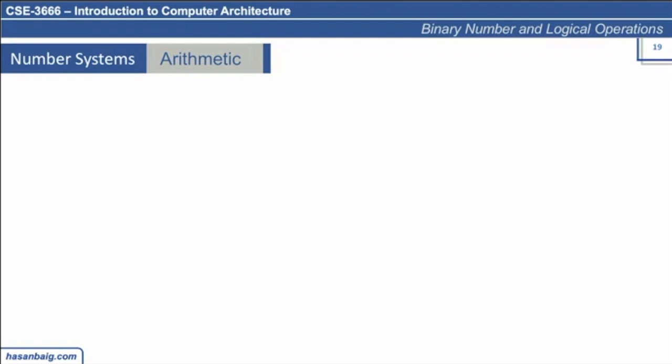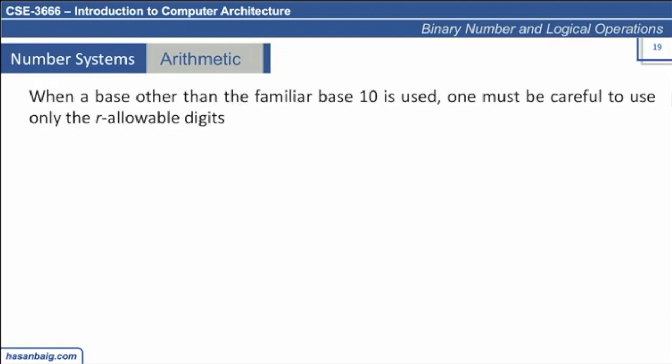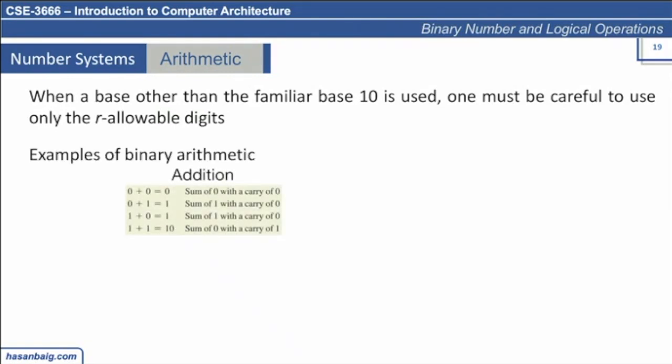Let's talk about arithmetic. Arithmetic in the decimal number system is easier, as you have been learning since elementary school. But when we are dealing with a different base system, a different radix system, we need to be very careful dealing with the arithmetic. For example, let's talk about binary arithmetic.